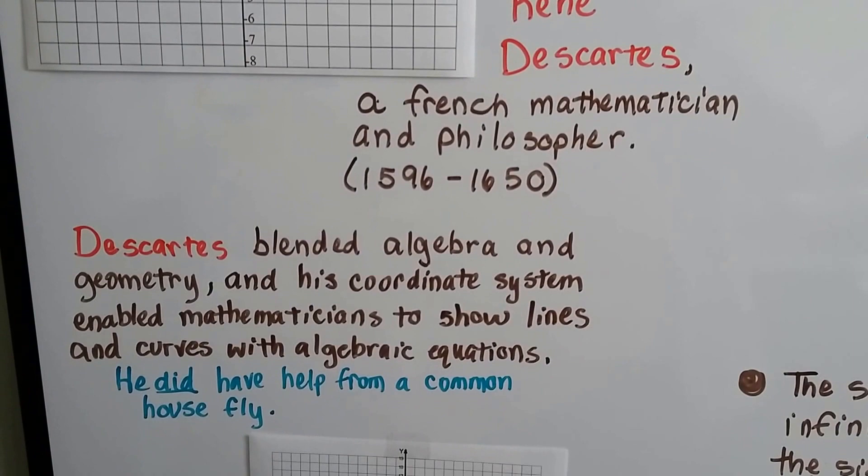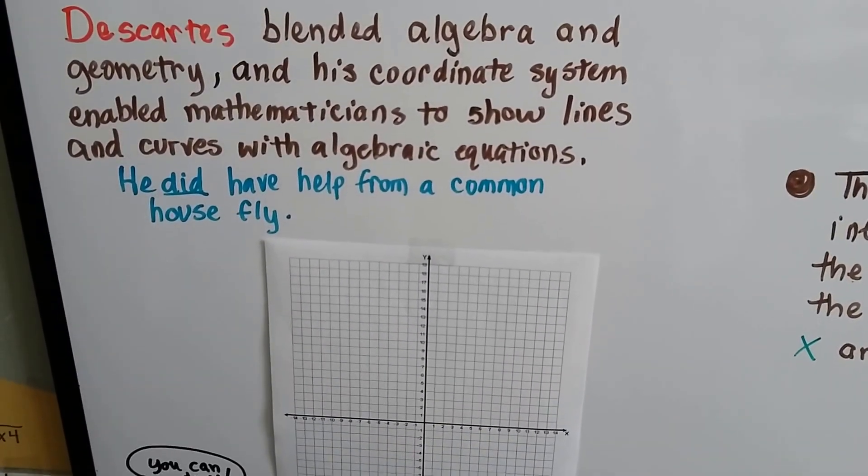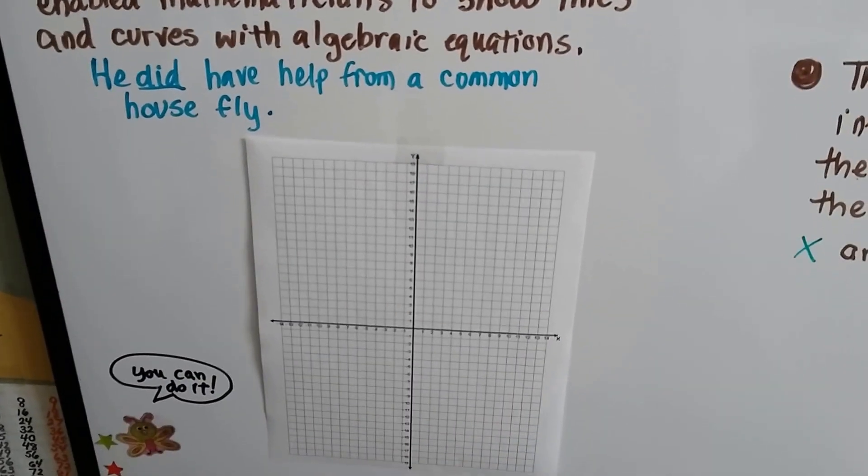Descartes blended algebra and geometry together, and his coordinate system enabled mathematicians to show lines and curves with algebraic equations. He did have help from a common housefly.